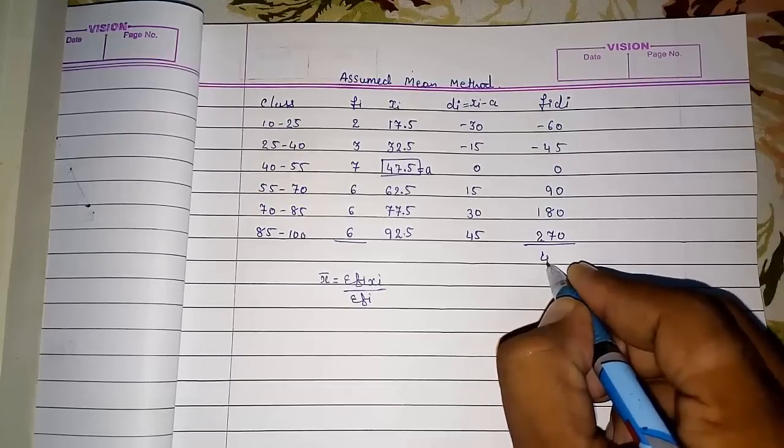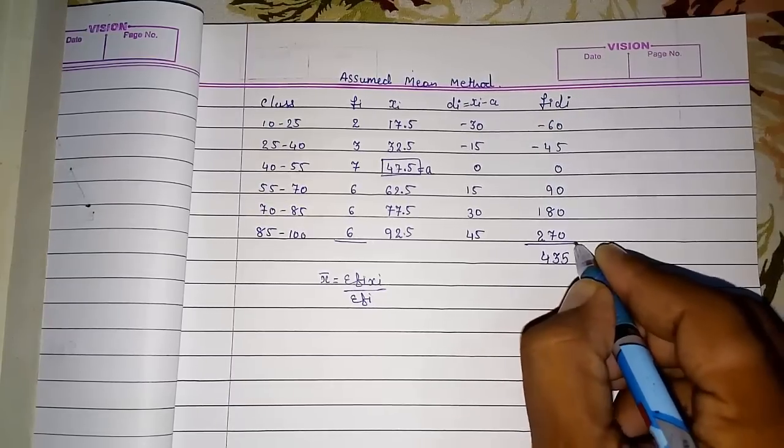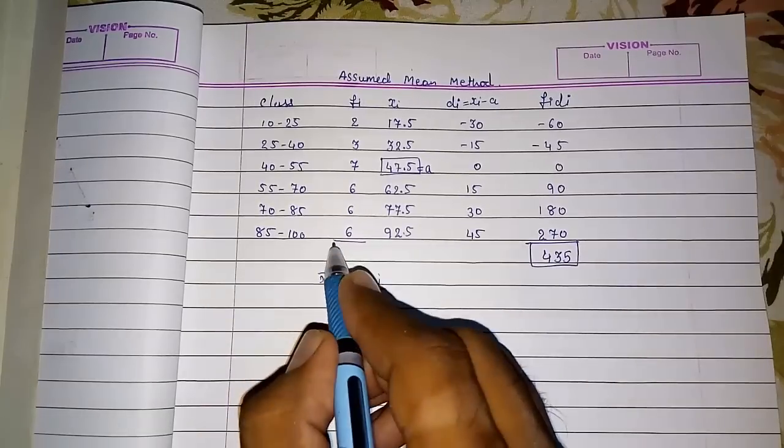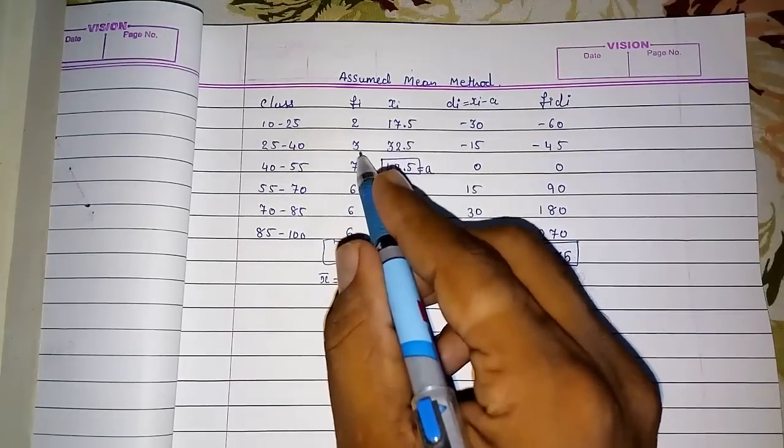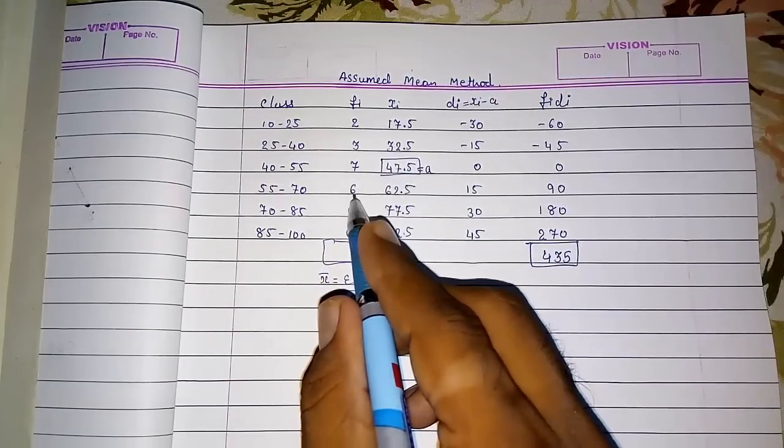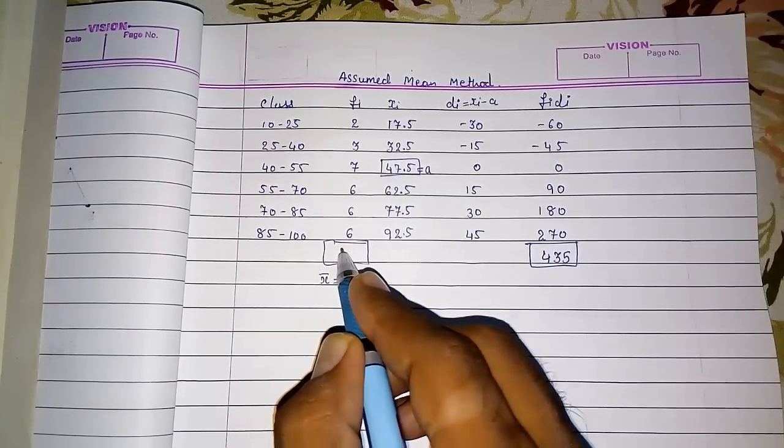We have to subtract 105 from these positive numbers' addition, so it will be 435. And then you have to find out fi also. So here fi will be 2, 5, 7, 12, 18, 24, and 30.